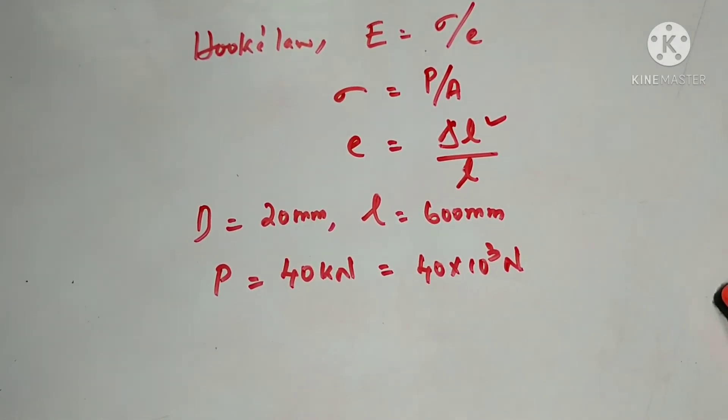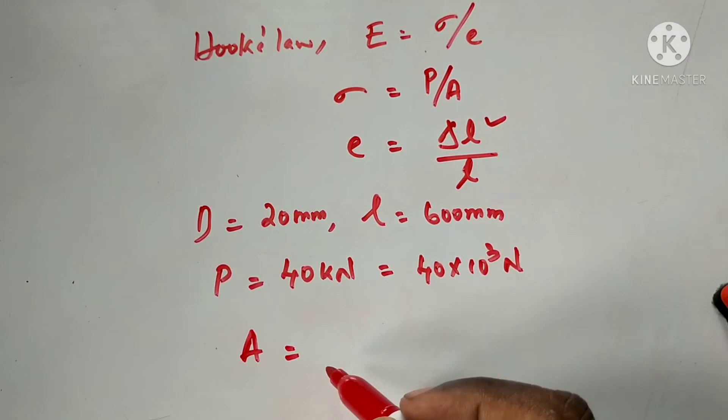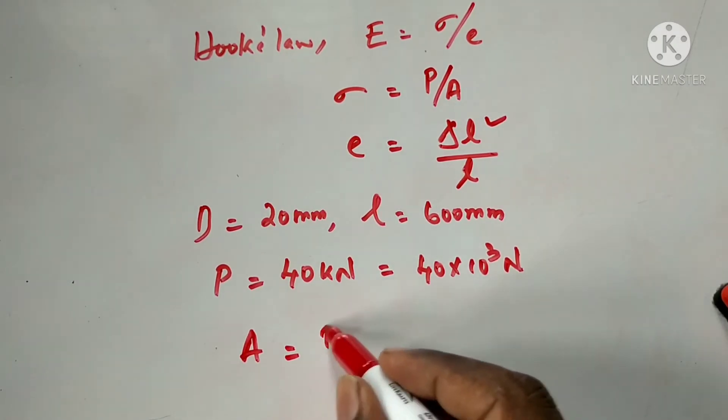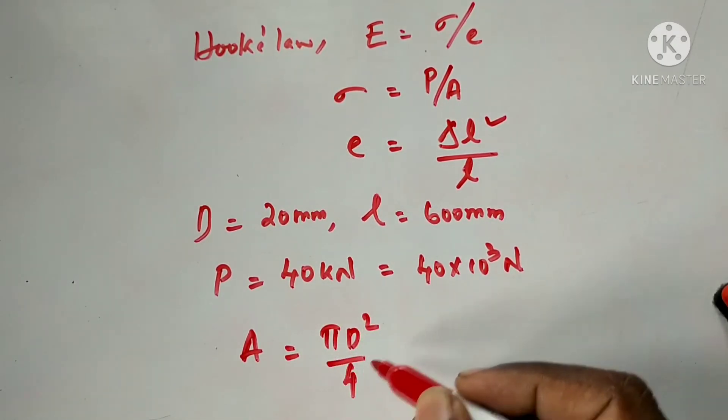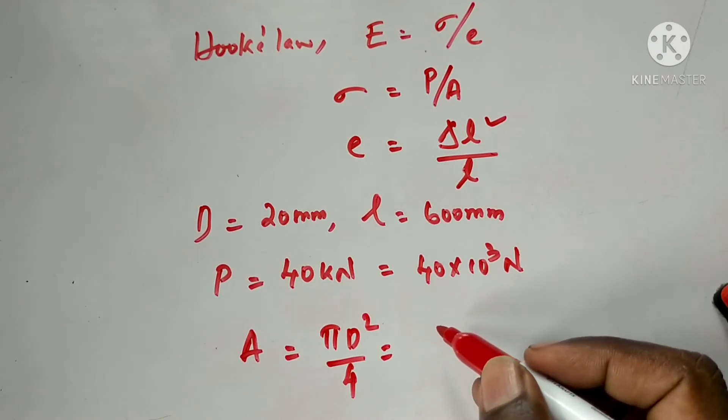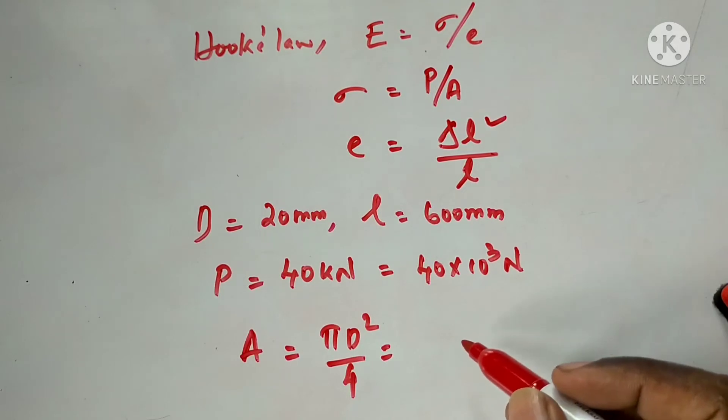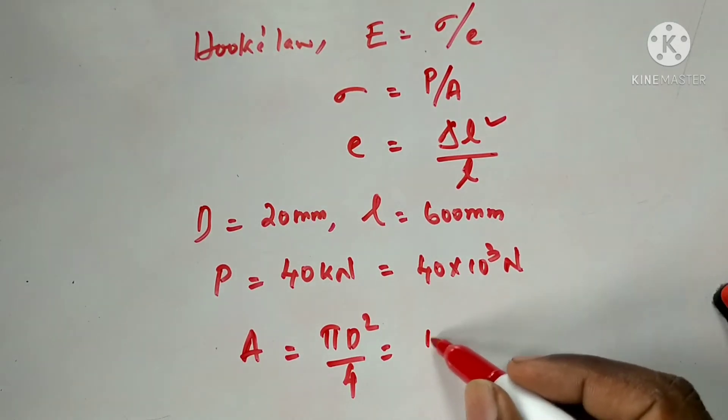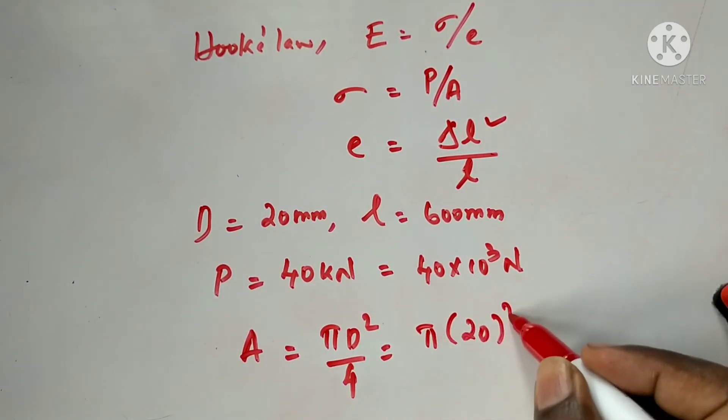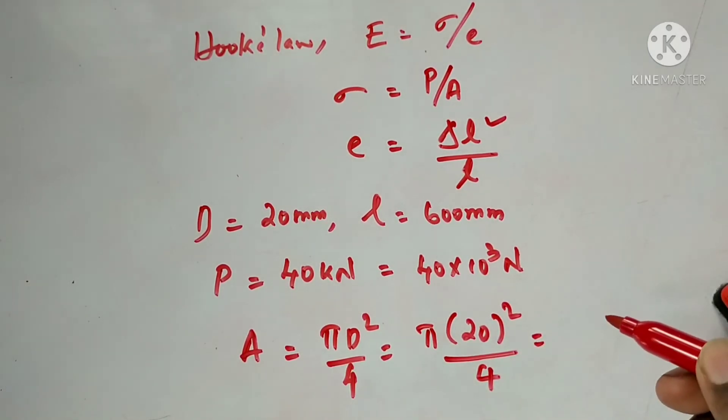If we apply this equation, first we find A. In a circular cross section, it equals πD² by 4. If we substitute the diameter value of 20, then we calculate: π × 20² / 4 = 314.16 mm².